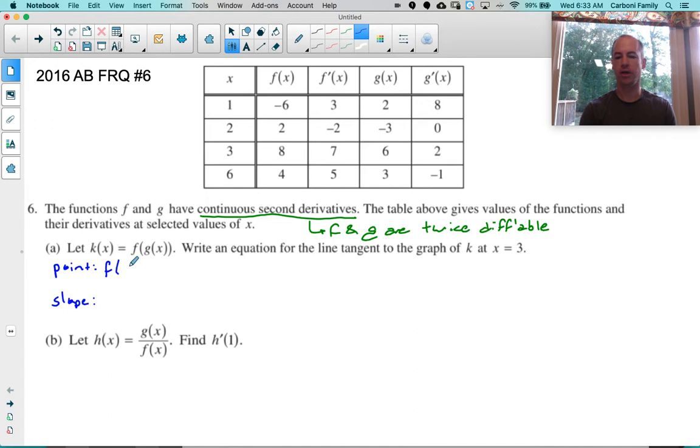The point you're going to just plug 3 into the function k. So k of 3, and the slope would be k prime of 3. Plugging 3 into G, G of 3 is 6 and F of 6 is 4, so we now have an ordered pair. My point is (3, 4).